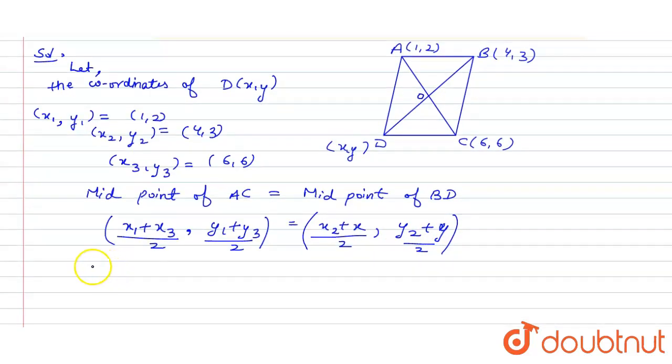So, we have X1 is 1, X2 is 4 and X3 is 6. Putting the values of X1, X2, X3 and Y1, Y2, Y3 here. We will get 1 plus 6 upon 2 and 2 plus 6 upon 2 will be equal to 4 plus X upon 2 and 3 plus Y upon 2.